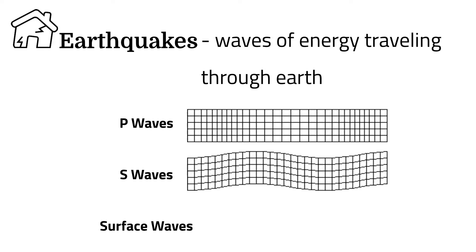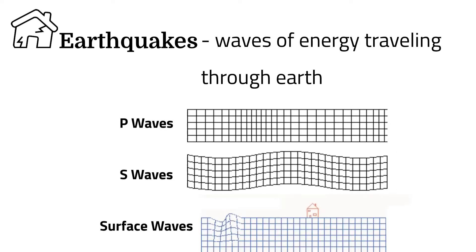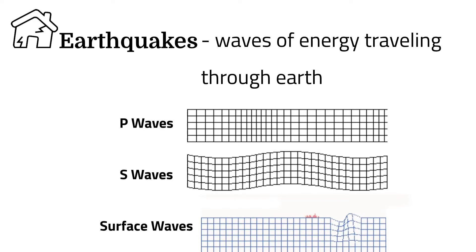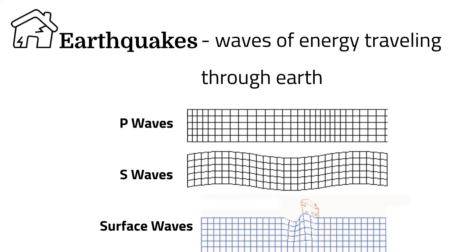S waves, or secondary waves, are only able to pass through solids. Both P and S waves can travel within the Earth. Surface waves, however, only travel on the surface of the Earth. They are the slowest of the three, and they can create a rolling motion and cause the most damage.